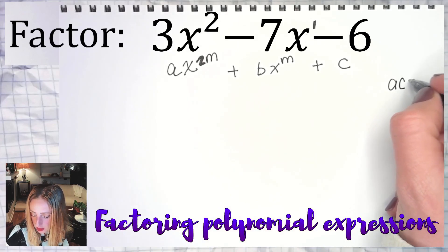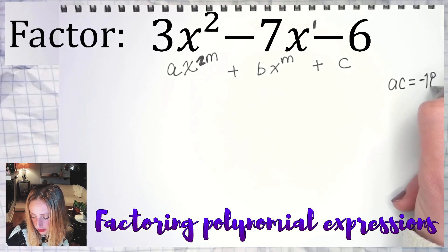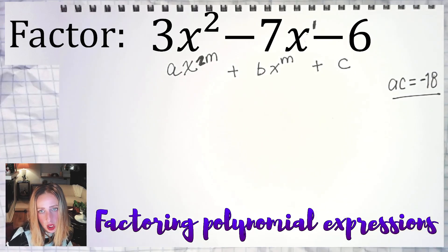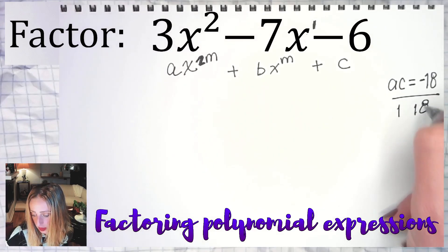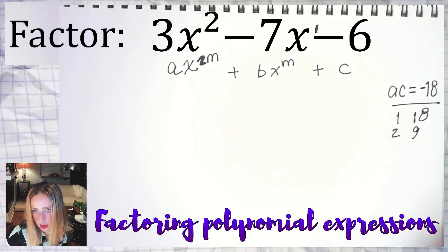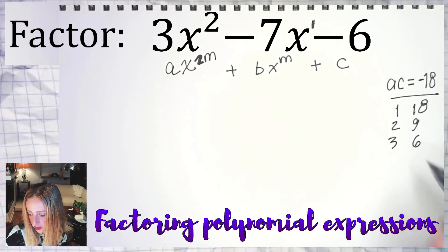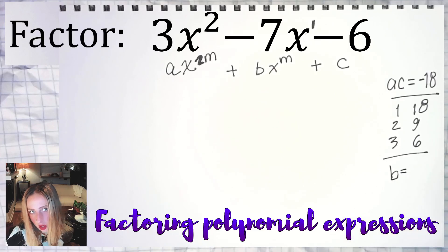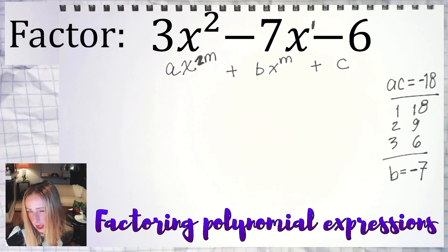AC is the product of A and C — in this case 3 and negative 6 — and that's going to be negative 18. Obviously if you don't know your times tables you're going to have a hard time on the rest of the examples. So from here we make our list of factor pairs. In this example it's 1 and 18, 2 and 9, and 3 and 6. That's the full list.